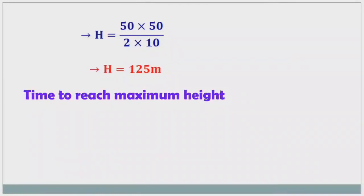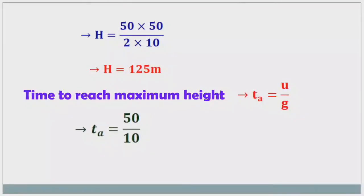Time to reach maximum height is time of ascent: TA = u/g. Substituting: TA = 50/10 = 5 seconds. Time of ascent is equal to 5 seconds.